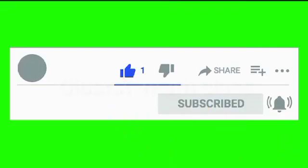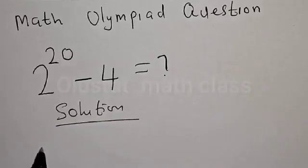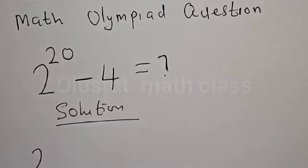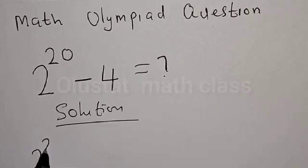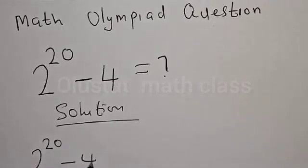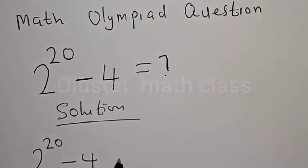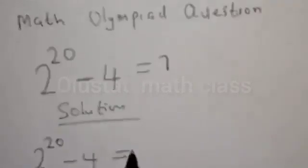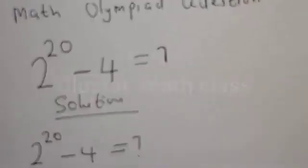Solution. We have the given equation: 2 raised to power 20 minus 4, which is unknown.